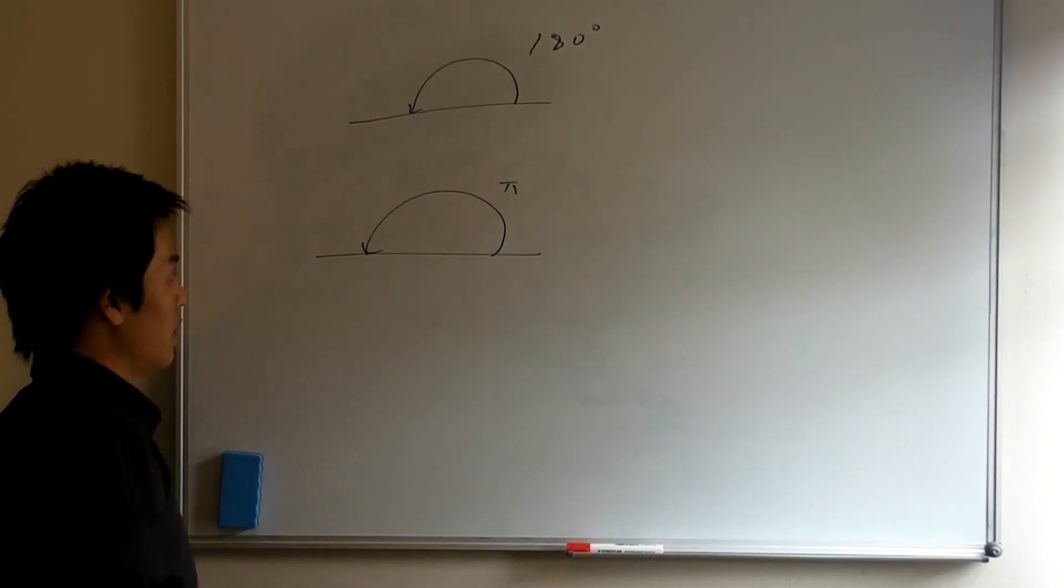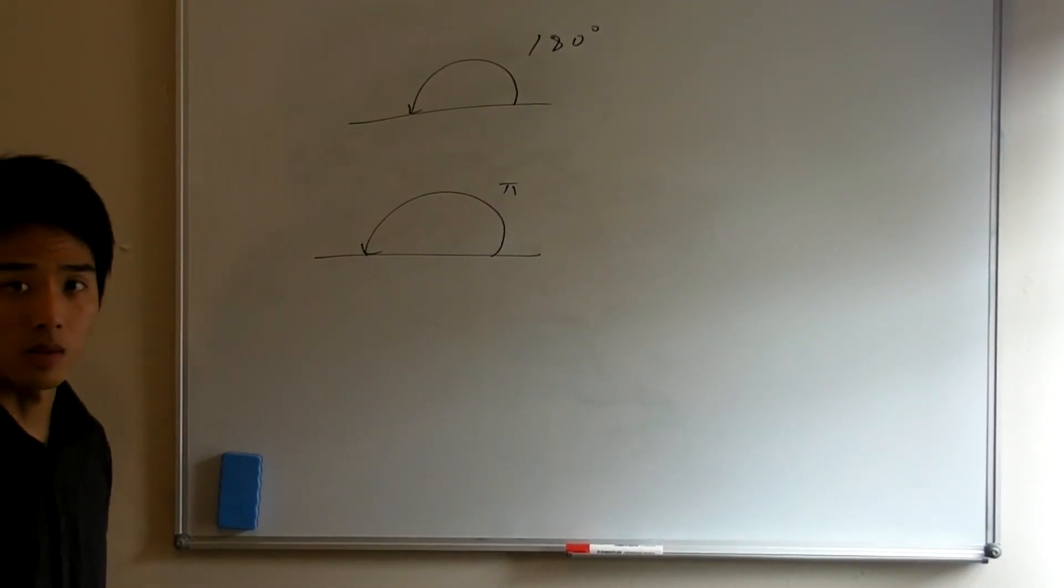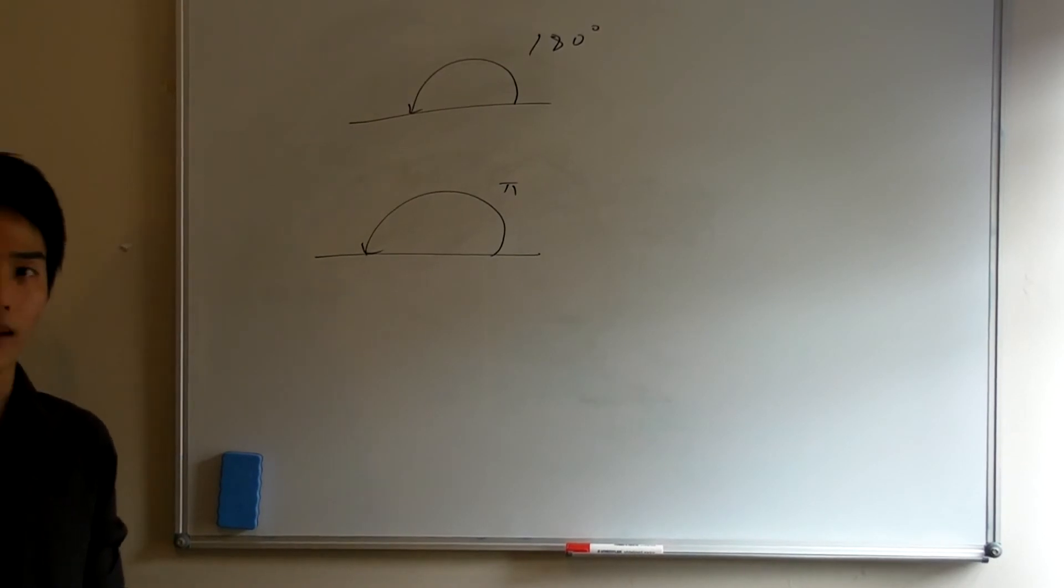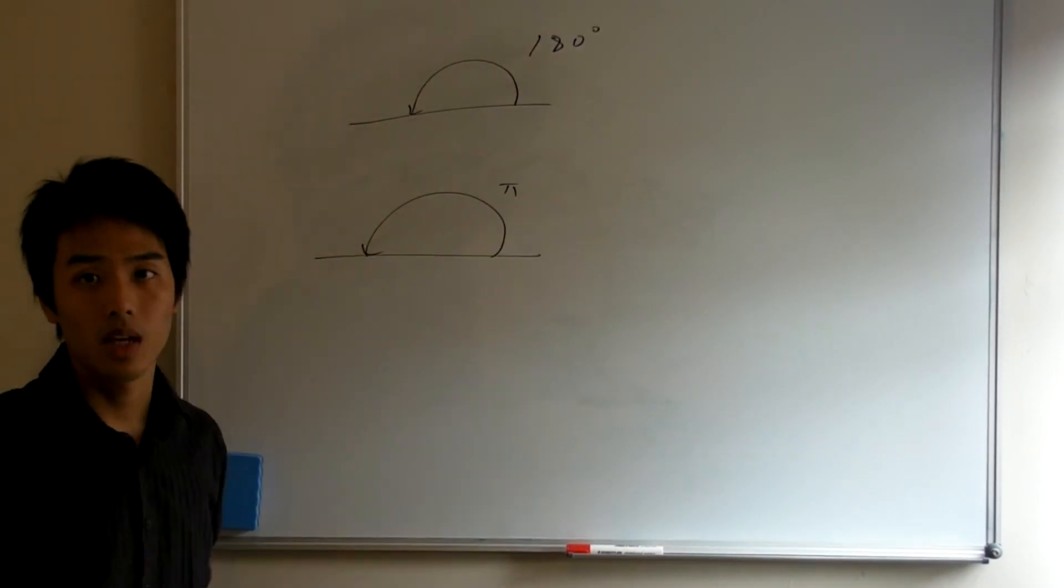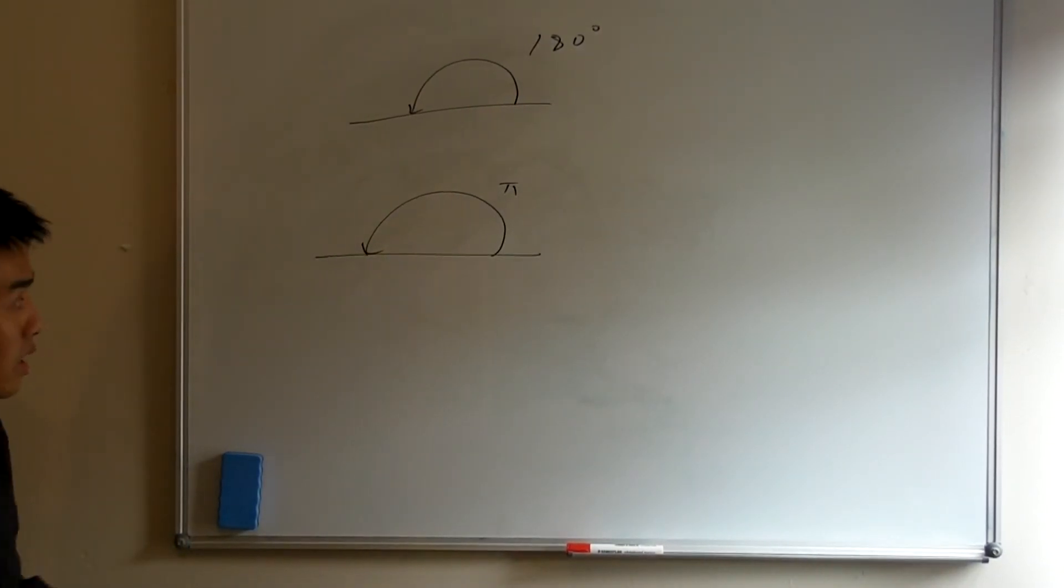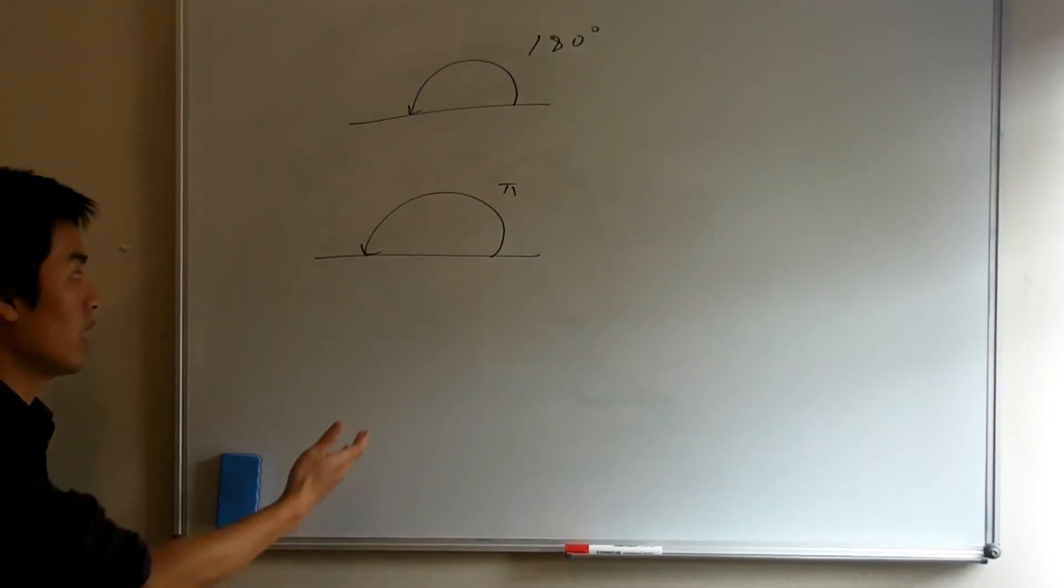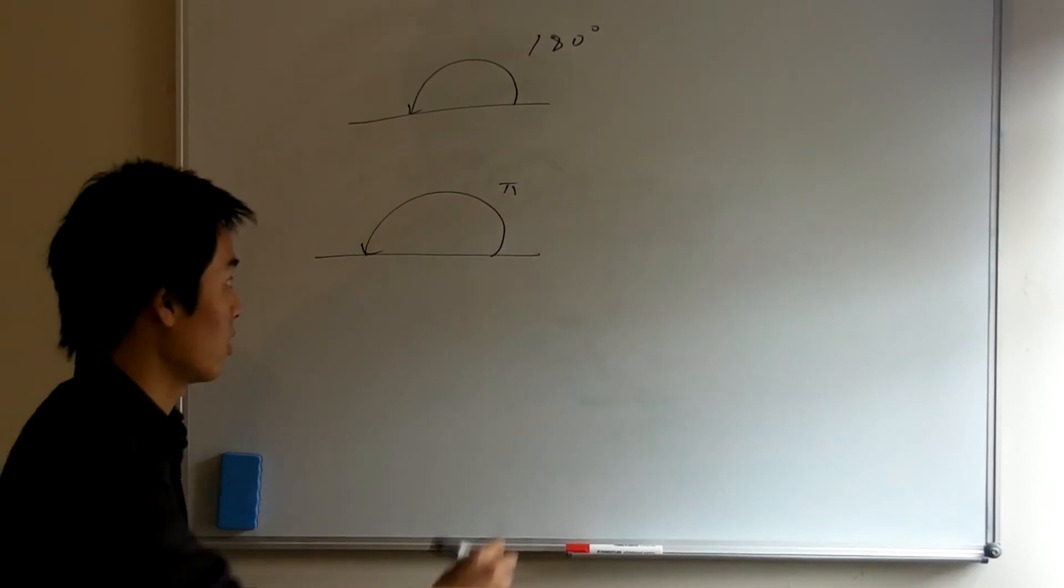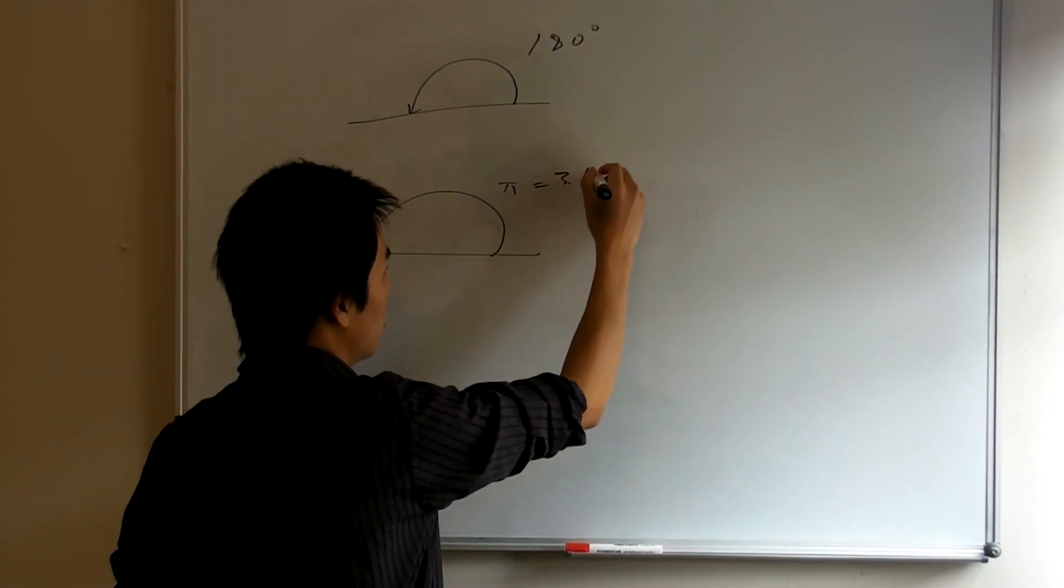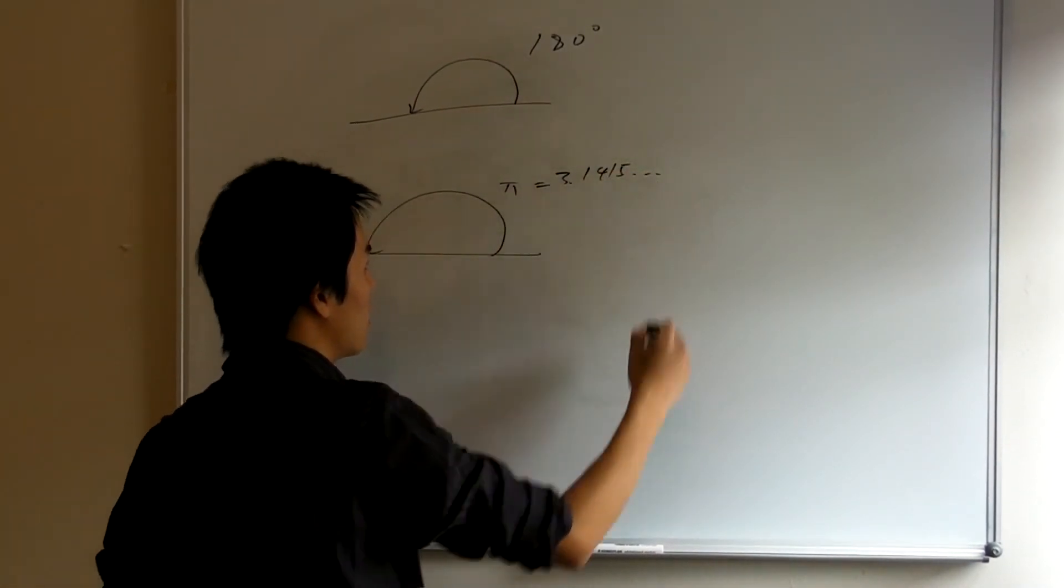And it's a bit of an odd choice because, well, π certainly doesn't have the advantages of 180. It doesn't have nice factors. It's not even rational. So, in fact, all the angles have this awkward numerical value that doesn't even terminate. And so on.